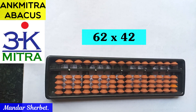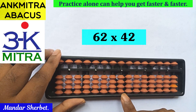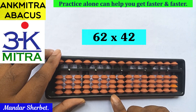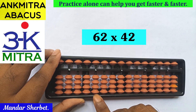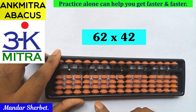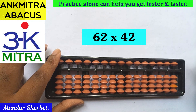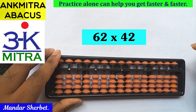We'll be starting from the fourth rod on the abacus. This is our first rod — the units place rod — then units, tens, hundreds, and thousands. So this is our fourth rod, and our calculation will start from this fourth rod. What we do is we first consider the tens place digit of the multiplier number.